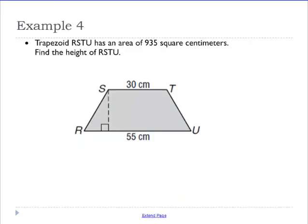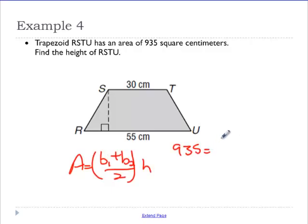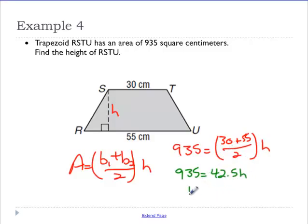Next one, go ahead and start trying it. We need to find the height, we're already given our two bases. So, the area is 935, base 1 is 30, base 2 is 55, and we're looking for h. So, let's evaluate. 30 plus 55 is 85, divided by 2, you get 42.5. So, 935 equals 42.5 times h. And let's just divide. 935 divided by 42.5, you get h is 22.